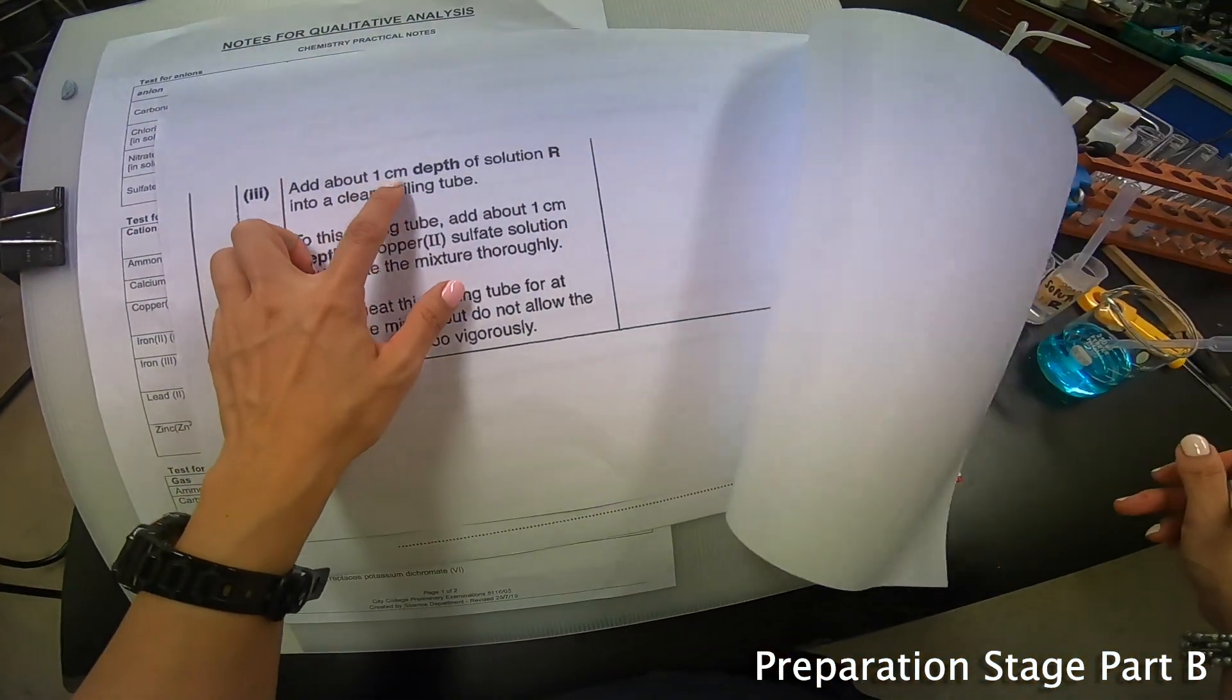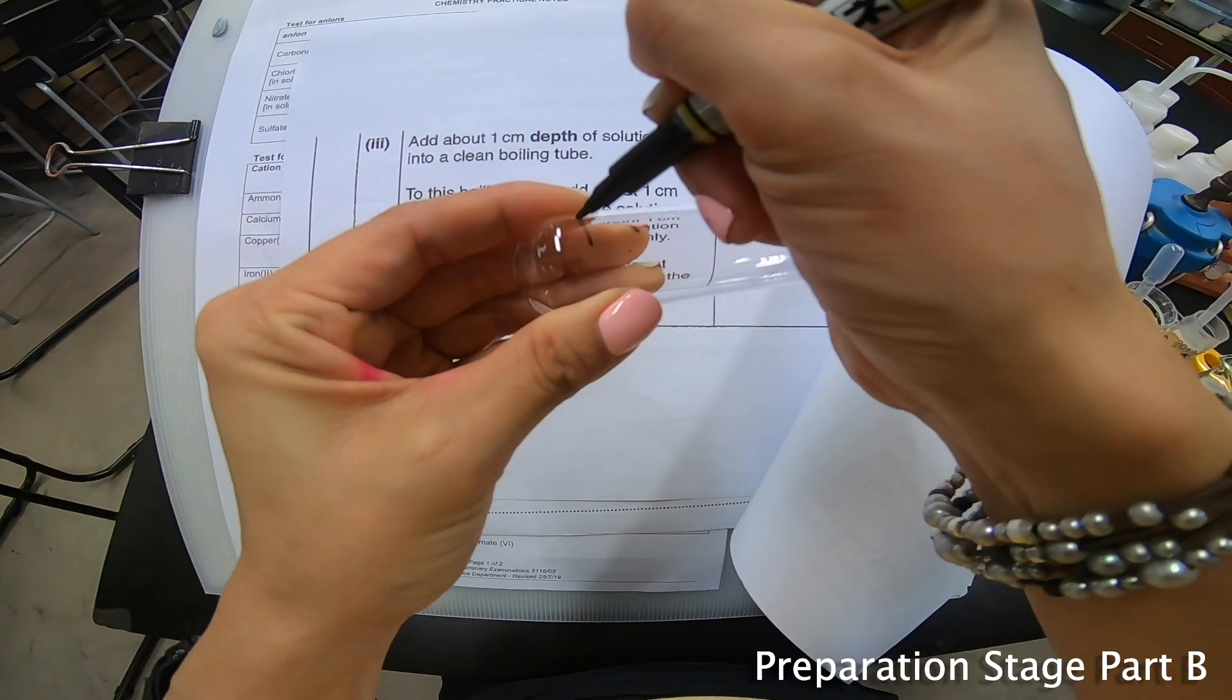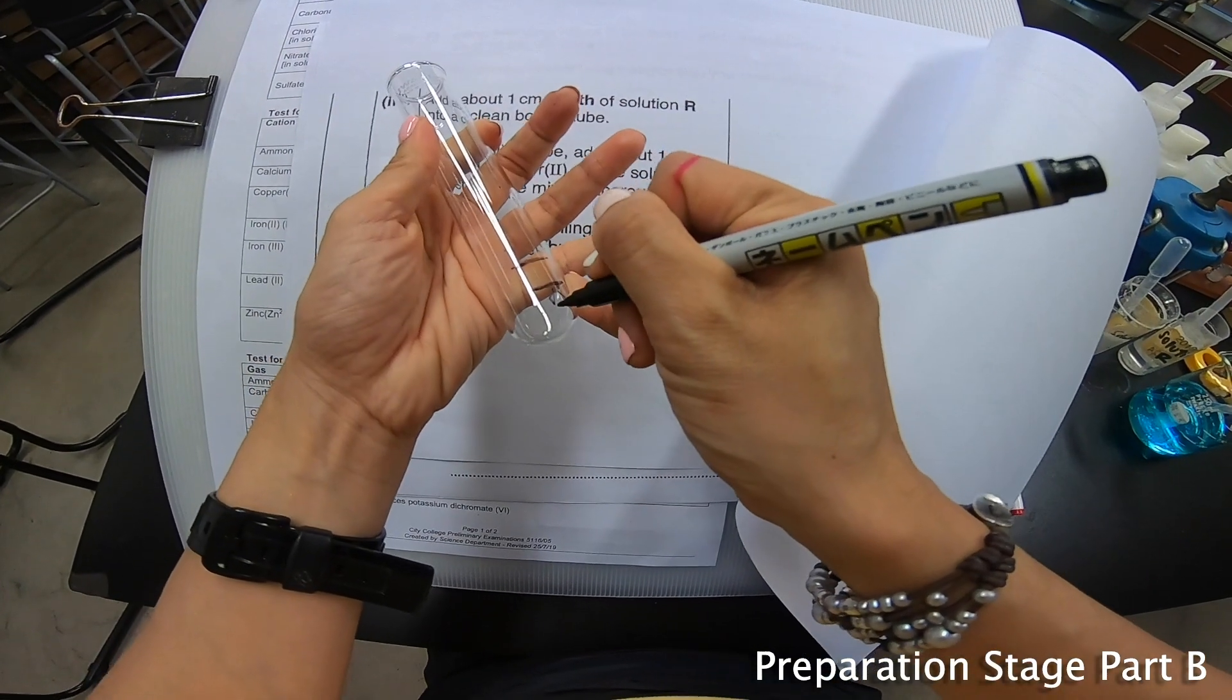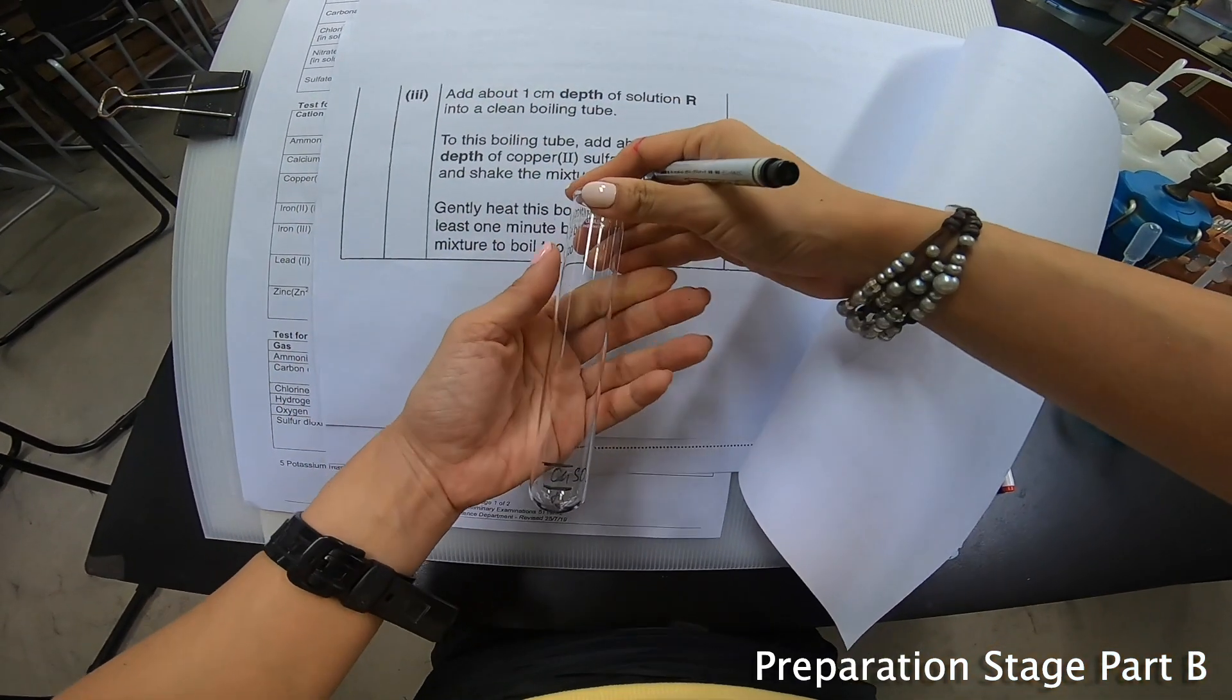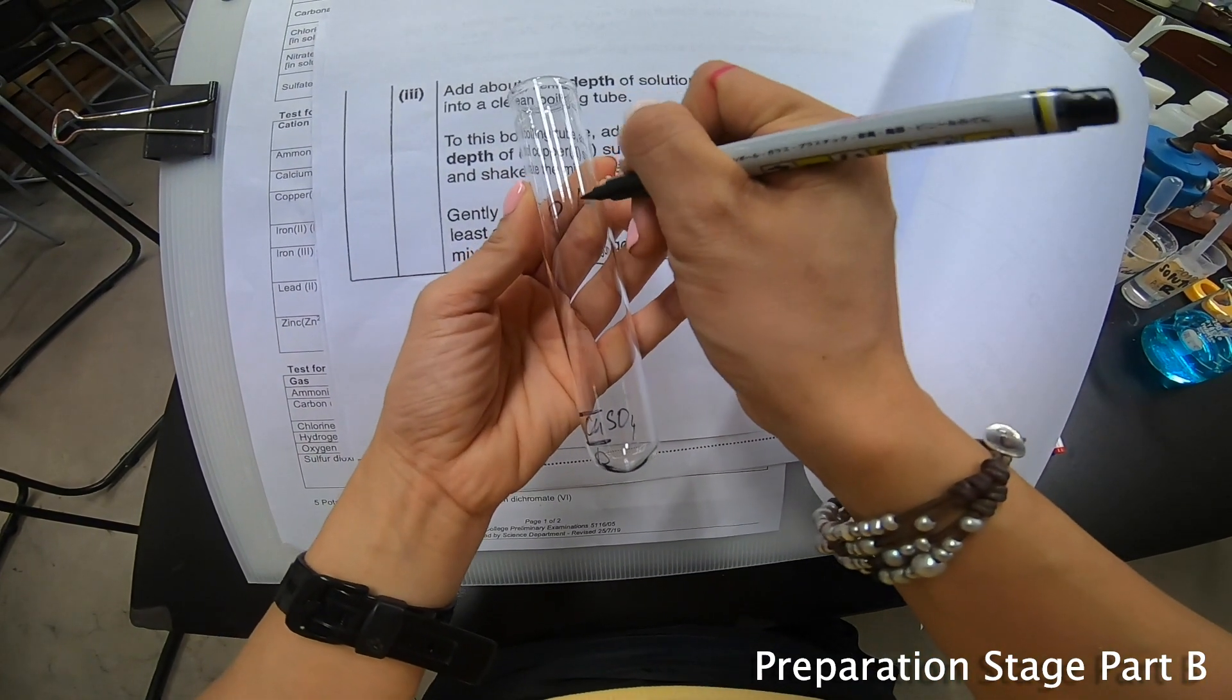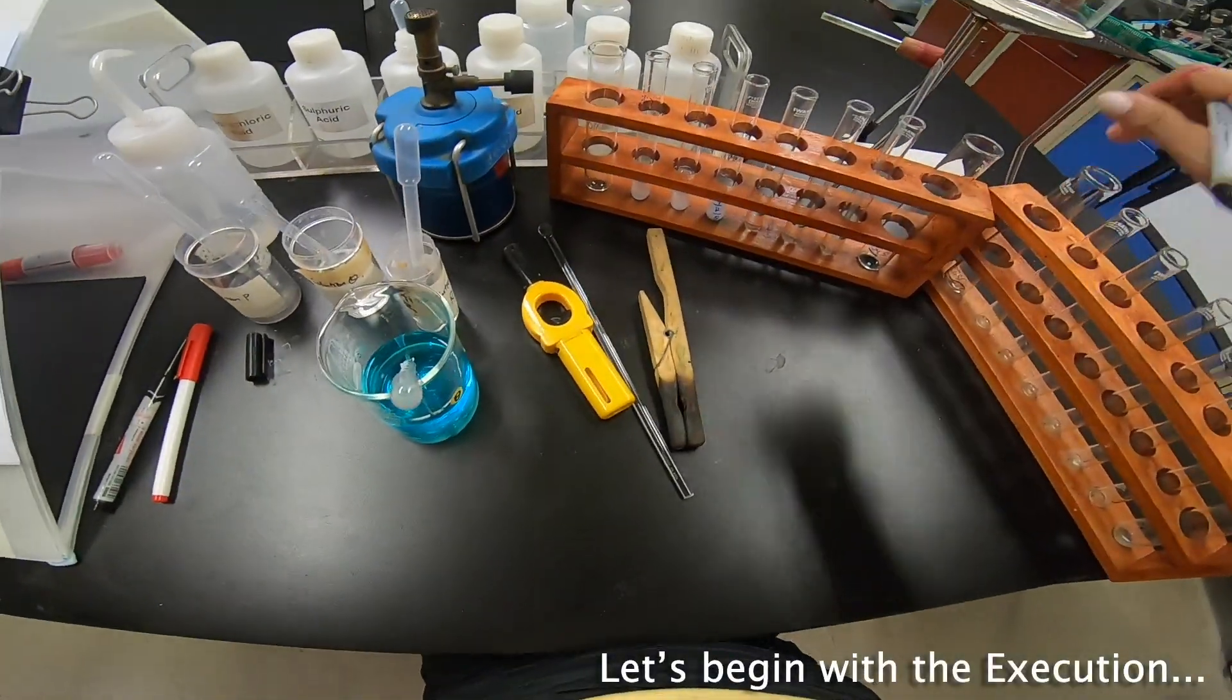Now to the next part here, say add about 1 cm depth of solution R into a clean boiling tube. Now this is a boiling tube, 1 cm. Another 1 cm. And then this is R, and then this is CuSO4. And then I make sure I add in, label it as B part 3. So I've labeled everything. So let's begin the entire experiment.